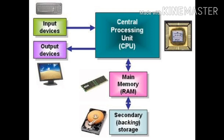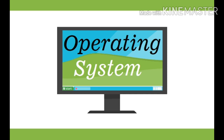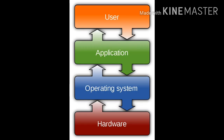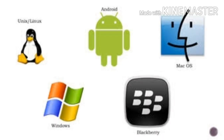How these components work properly is managed by the operating system. An operating system is an interface between the user and hardware, which helps the user interact with hardware via different applications. Different types of operating systems include Unix, Linux, Android, Mac, BlackBerry, and Windows, each helpful for different devices.